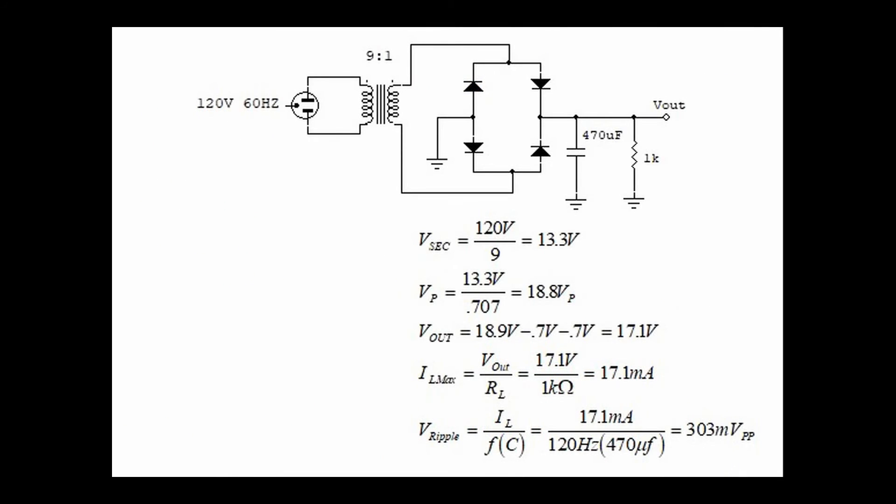To further improve our DC level, let's go back to our bridge rectifier circuit and insert a very large capacitor, 470 microfarad. Once again, we calculate secondary voltage, then we calculate peak voltage, and then we calculate V_out, this time with two diode drops, for a total of 17.1 volts.